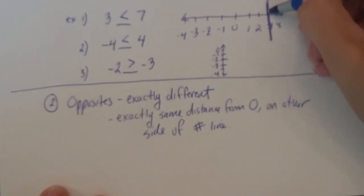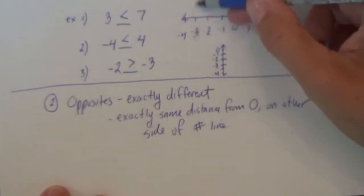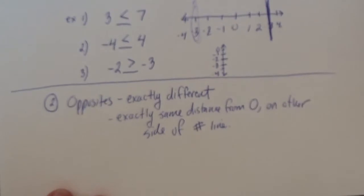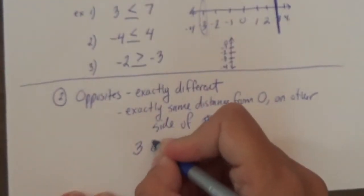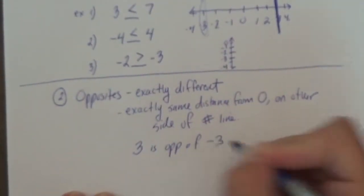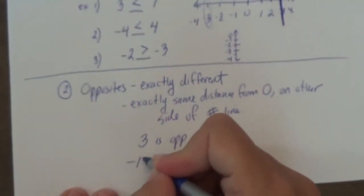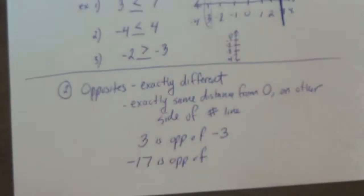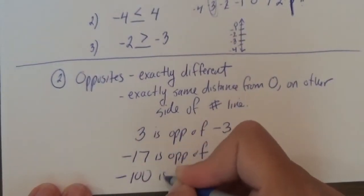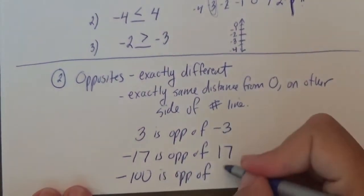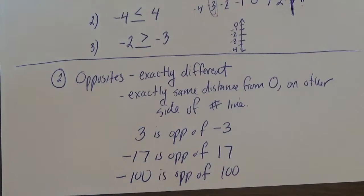So go back to your number line here. So if I said 3, what's the opposite of 3? Well, 3 is 1, 2, 3 away from 0, right? What's exactly on the other side? Negative 3. So 3 and negative 3 are opposites. 2 and negative 2 are opposites. Pretty easy. I don't think I can trick you. Let's write those down. 3 is the opposite of negative 3. What if I said negative 17? What's the opposite of negative 17? 17. What's the opposite of negative 100? 100. So pretty easy stuff. Comparing and opposites. Pretty good stuff.